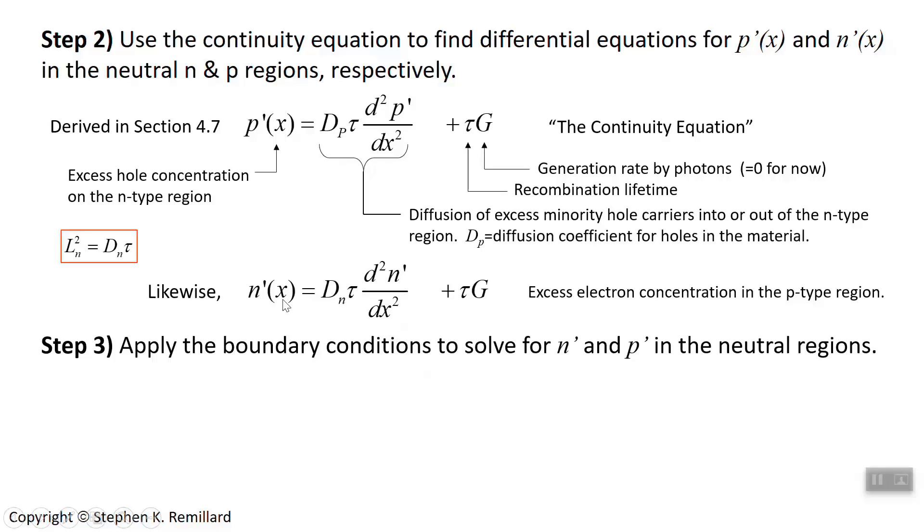Only one makes sense. For example, if x is positive, you wouldn't keep the e to the plus x term, because it blows up at large x. Write out the expressions, then. So what you need to do right now is probably just pause the video again and convince yourself that this equation, remember, we're ignoring tau g, that these two equations have these two solutions. Or again, I've made this substitution that l sub p squared is d sub p times tau.